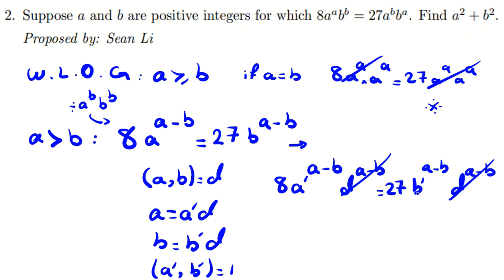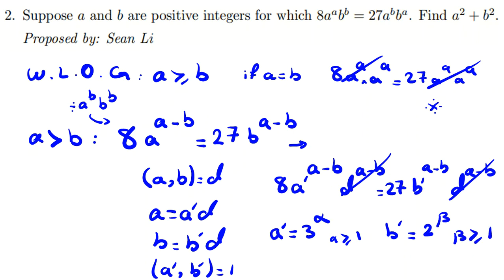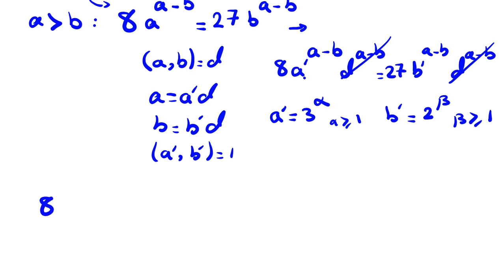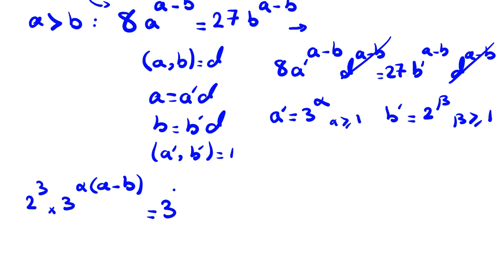Since a' and b' are coprime, a' can only contain the prime factor 3 (because 27 = 3³ divides the right side). So suppose a' equals 3^α, with α ≥ 1. Similarly, b' must be a power of 2 since 8 = 2³, so b' equals 2^β with β ≥ 1. Writing both sides with prime factorization: 2³·3^(α(a−b)) equals 3³·2^(β(a−b)).